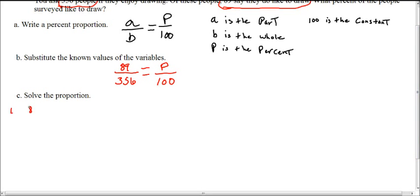Step one, 89 over 356 is equal to p over 100.